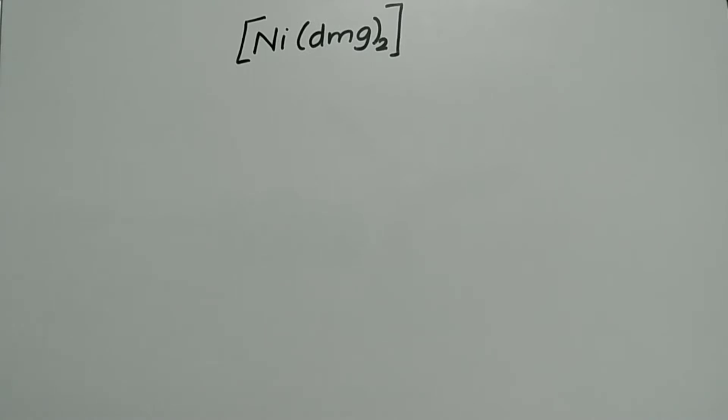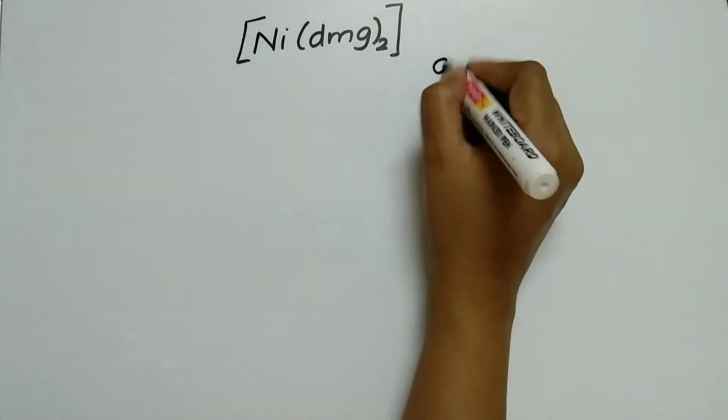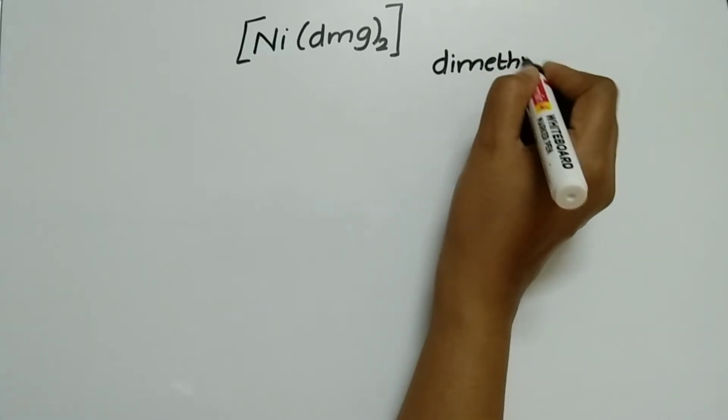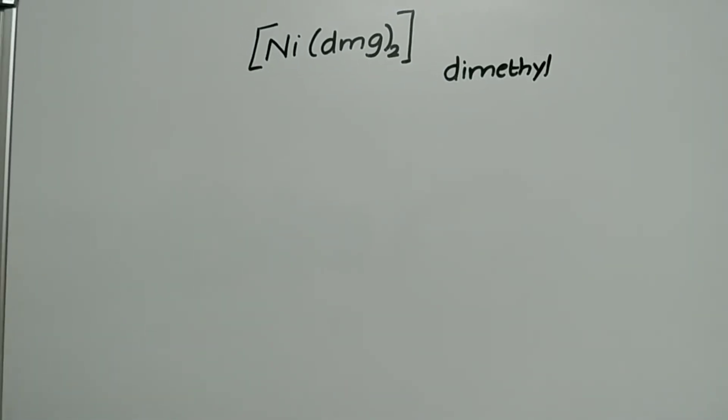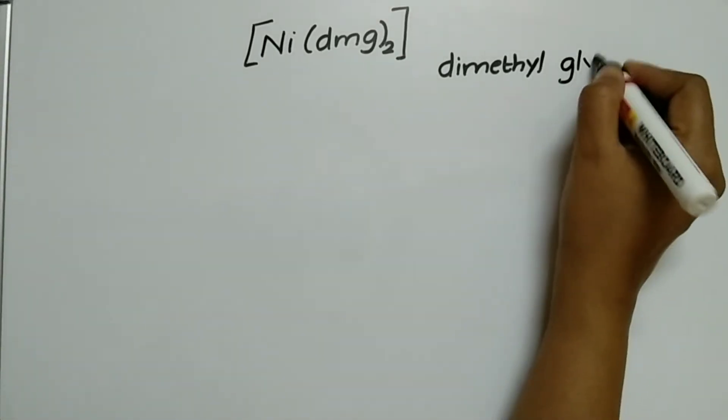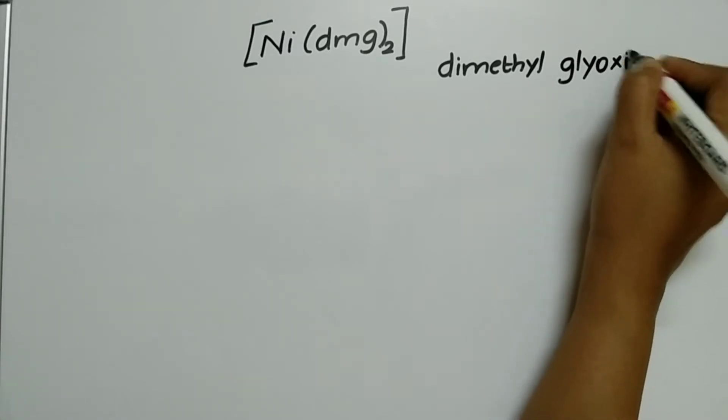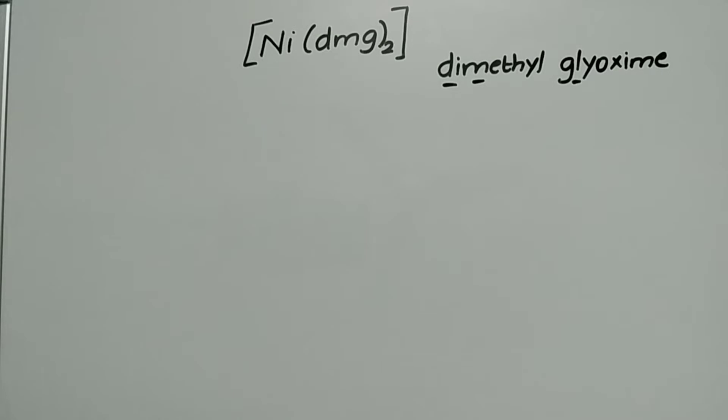Before finding the properties we should know what is DMG. What is DMG? It is dimethyl glyoxime, dimethyl glyoxime. See the full form DMG dimethyl glyoxime.